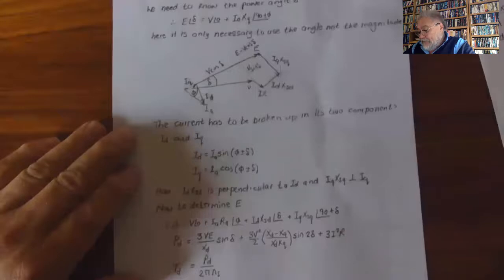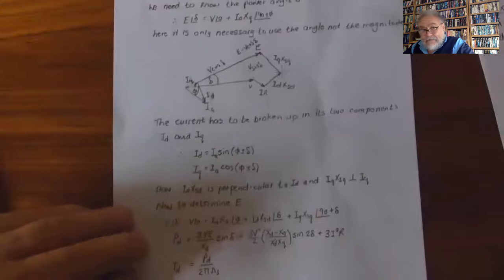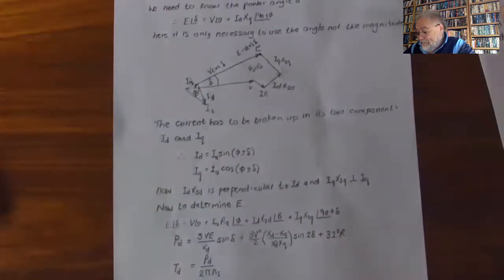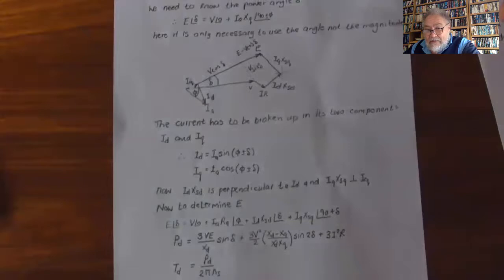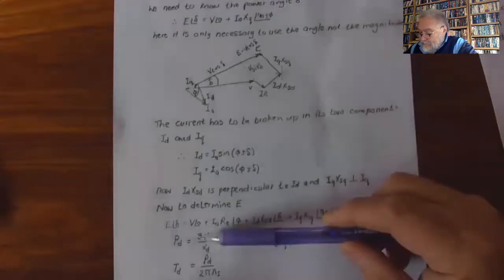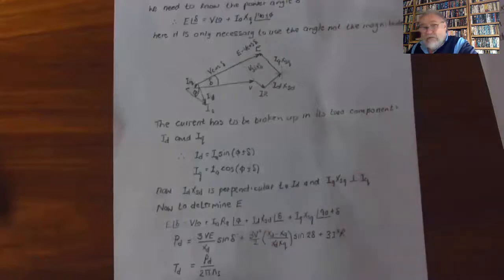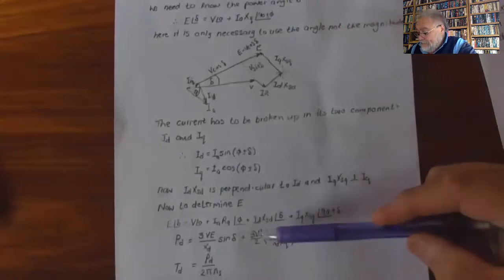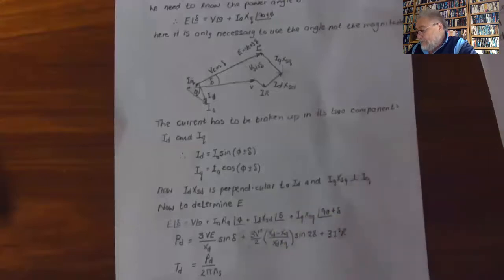The developed power is: P = 3VE/Xd · sin(δ) + 3V²/2 · (Xd − Xq)/(Xd·Xq) · sin(2δ) + 3I²R. The developed torque equals developed power divided by 2π·ns. The first part is called the power due to excitation and the second part is called the reluctance power.